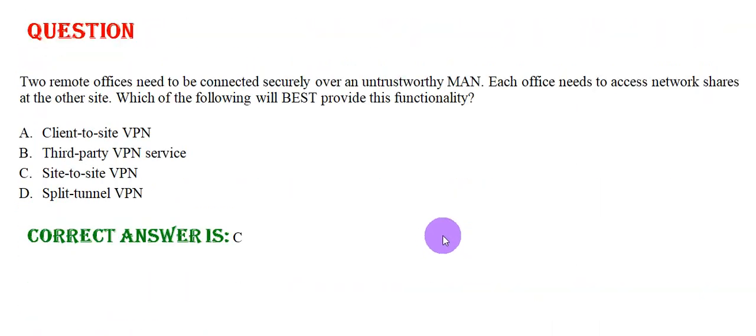Two remote offices need to be connected securely over an untrustworthy MAN. Each office needs to access network shares on the other site. Which of the following will best provide the functionality? Option A: Client-to-site VPN. Option B: Third-party VPN service. Option C: Site-to-site VPN. Option D: Split-Tunnel VPN. The correct answer is Option C.